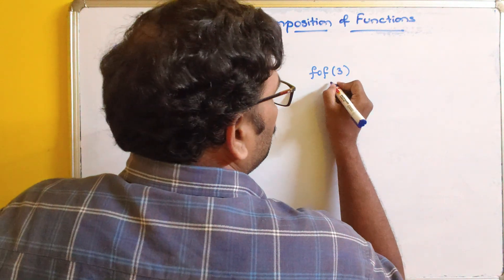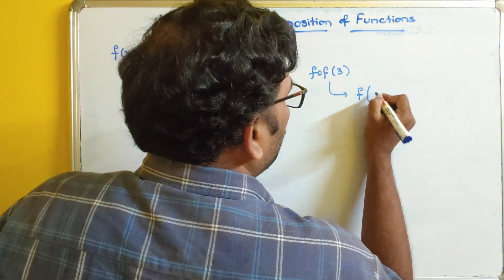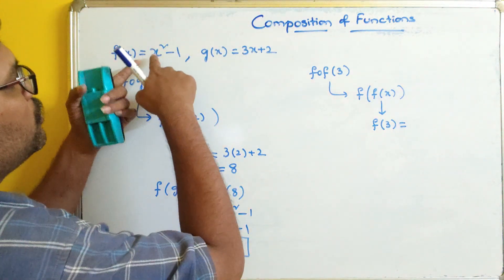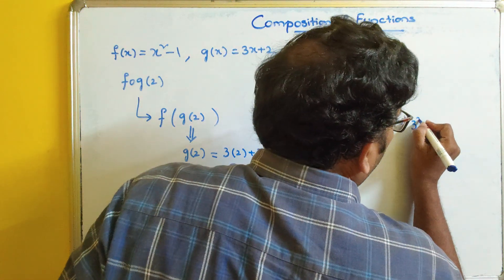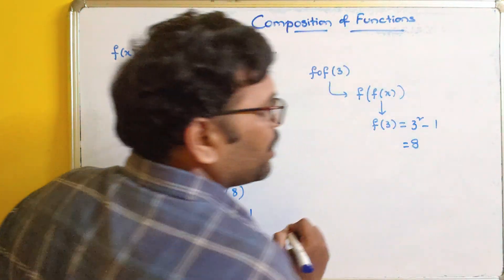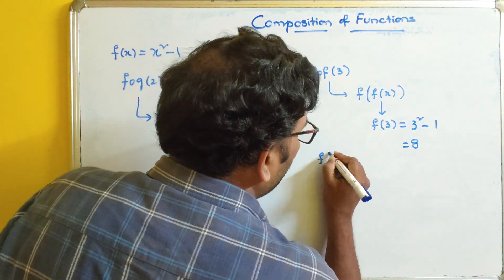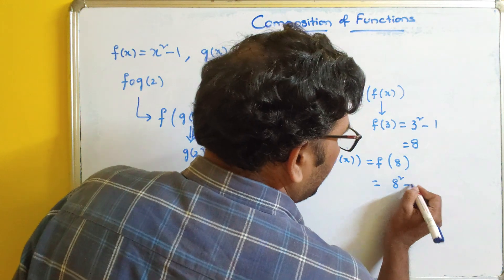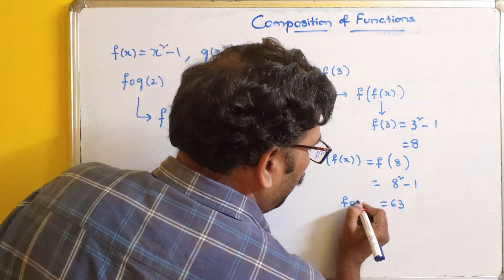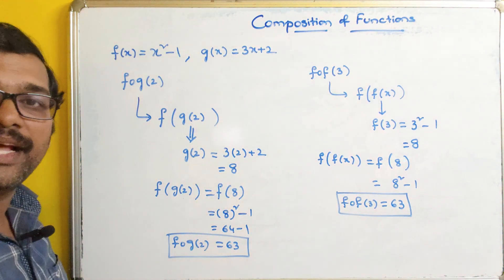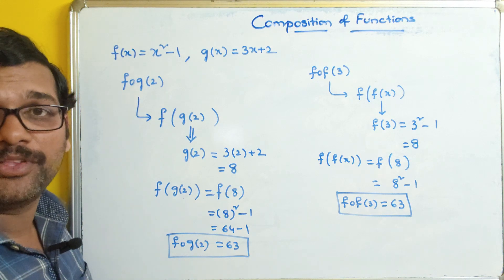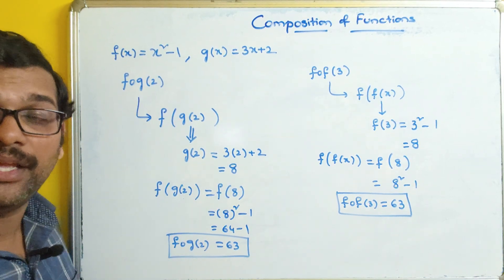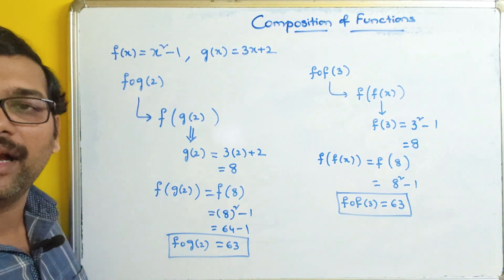Now for f of f of 3: first we calculate f of 3. Wherever x is there we substitute 3 in function f. So 3 squared minus 1 which becomes 8. Again we substitute: f of 8 gives 8 squared minus 1 which becomes 63. So f of f of 3 also gives the result 63. So not only finding equations — we can also take an x value and find the final result. Here we are combining two functions f and g and calculating the solution.